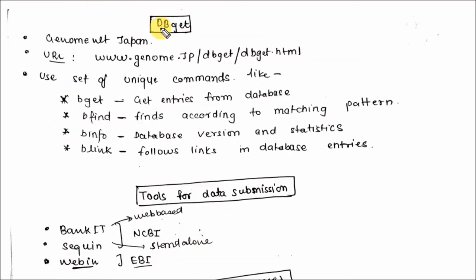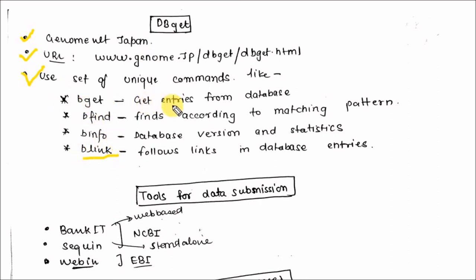The fourth search tool is DBGET, which is present at genome.net in Japan. You can find this tool by its URL. This tool uses a set of unique commands like bget, bfind, binfo, and blink. bget retrieves entries from the database; bfind finds entries according to matching pattern; binfo provides database version and statistics; and blink follows the links in database entries.